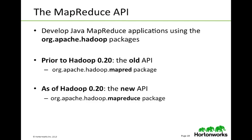Within MapReduce, there are two different APIs that are well known, found at org.apache.hadoop. Prior to Hadoop 2.0, which is known as Hadoop 1.0, it was the old API: org.apache.hadoop.mapred. With Hadoop 1.0 and future versions, it utilizes org.apache.hadoop.mapreduce.